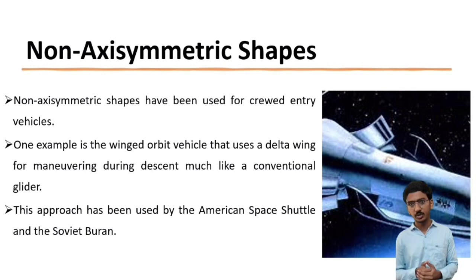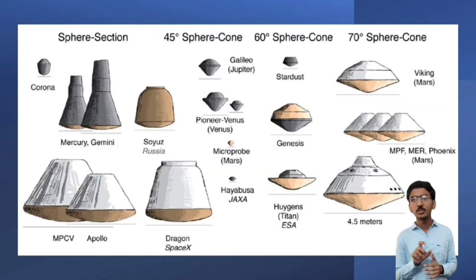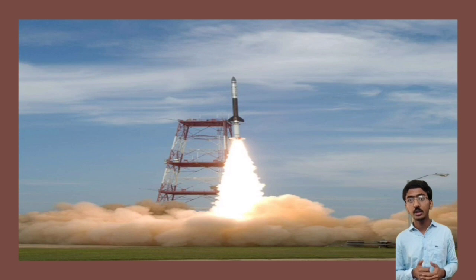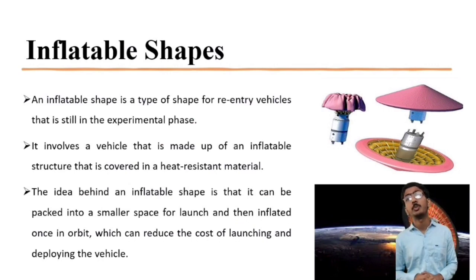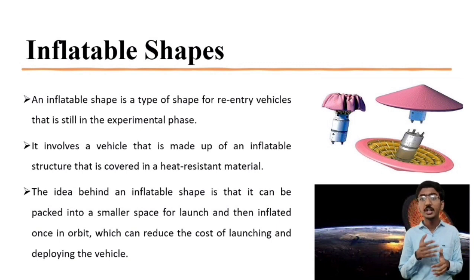Next is the non-axisymmetric shape. These shapes have been used for crewed entry vehicles. One example is the winged orbiter vehicle that uses a delta wing for maneuvering during descent, much like a conventional glider. This approach has been used by the American Space Shuttle and the Soviet Buran. The last shape is the inflatable shape, which is still in the experimental phase. It involves a vehicle made up of an inflatable structure covered in heat-resistant material. The idea is that it can be packed into a smaller space for launch and then inflated once in orbit, which can reduce the forces of launching and deploying the vehicle.